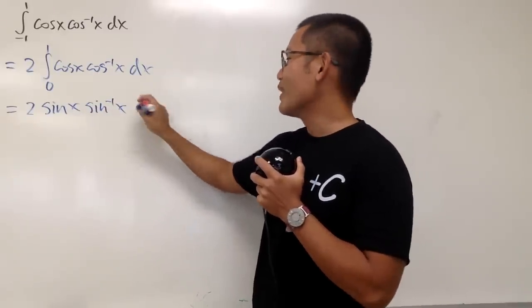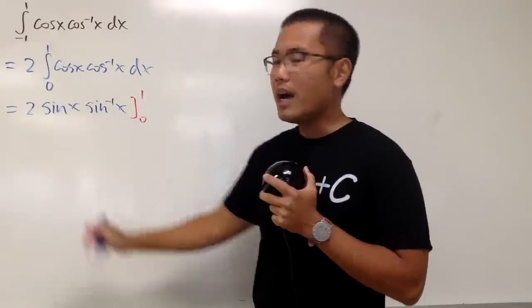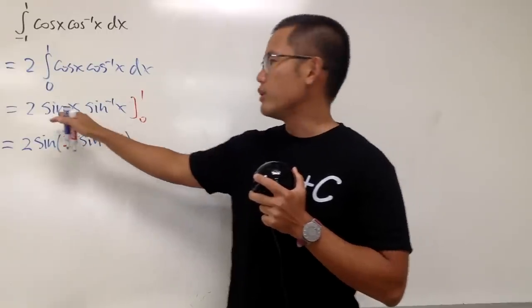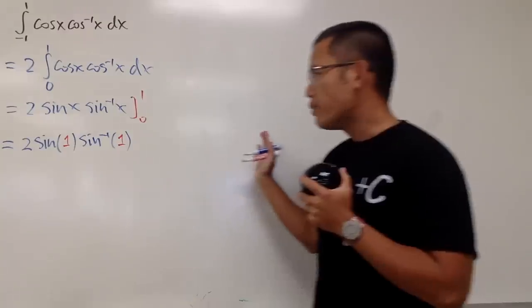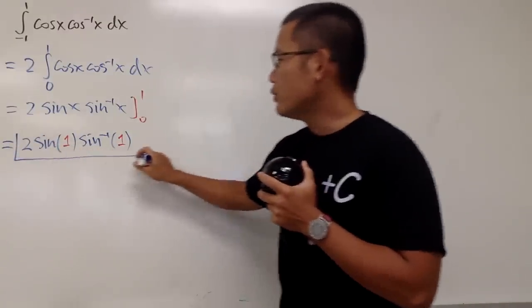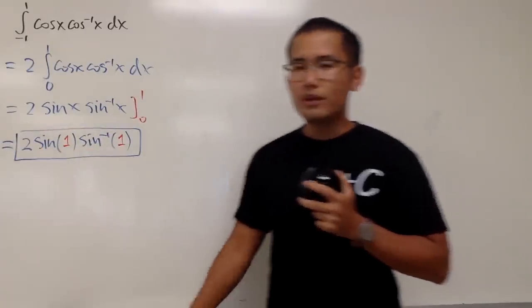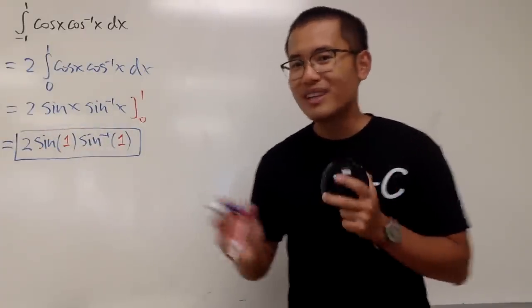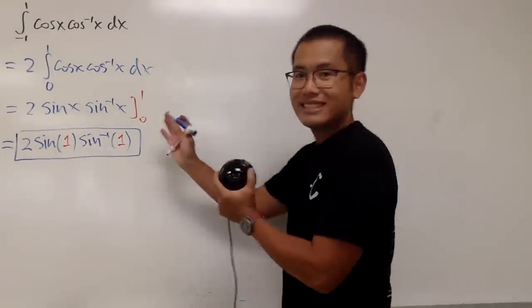And of course, now we have to just plug in numbers from 0 to 1, putting 1, and when we're putting 0 into sin x right here, for example, the second part is going to be 0, so it doesn't matter. This is it. We have 2 sin of 1, inverse sin of 1, right? So, hopefully you guys all like this video, and as always, that's it.